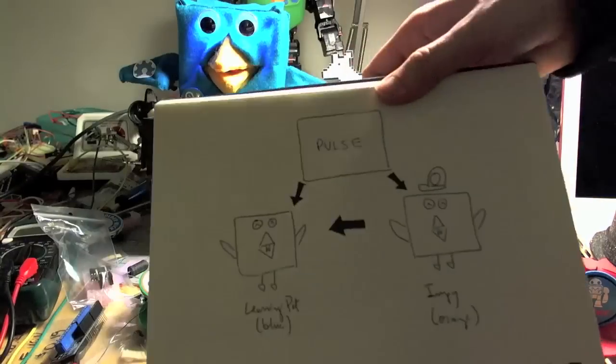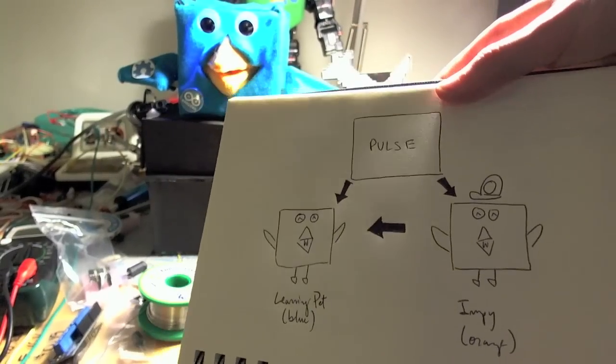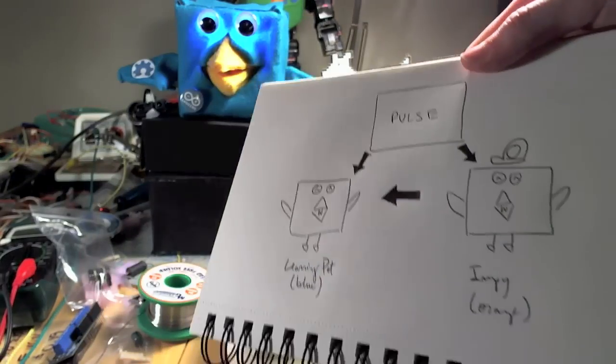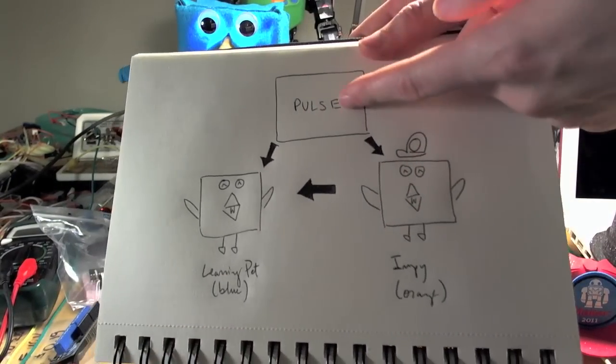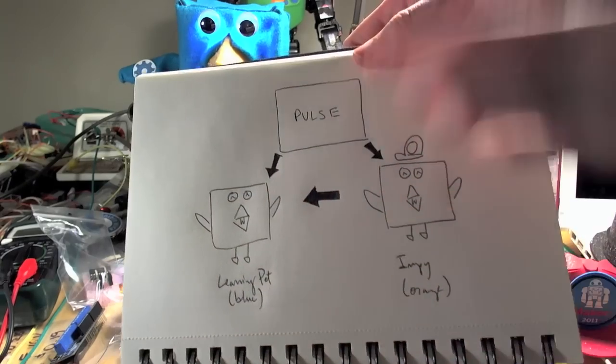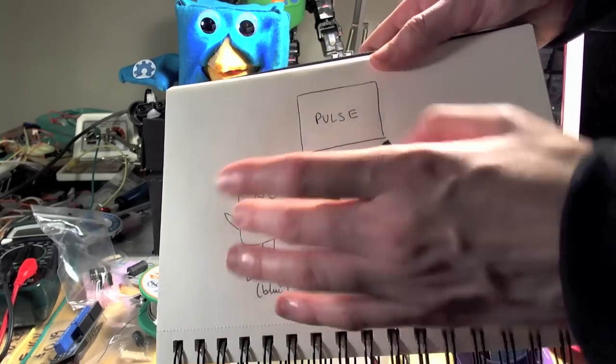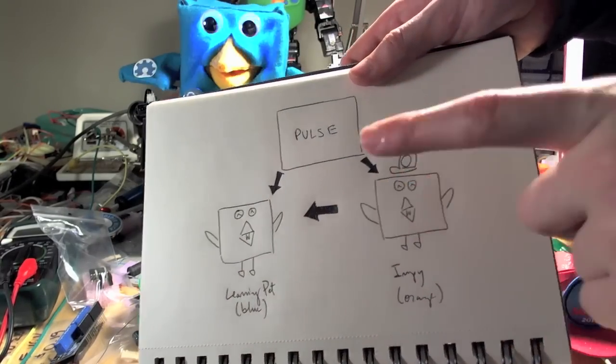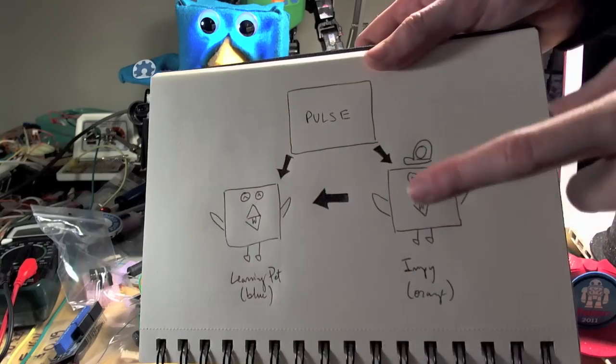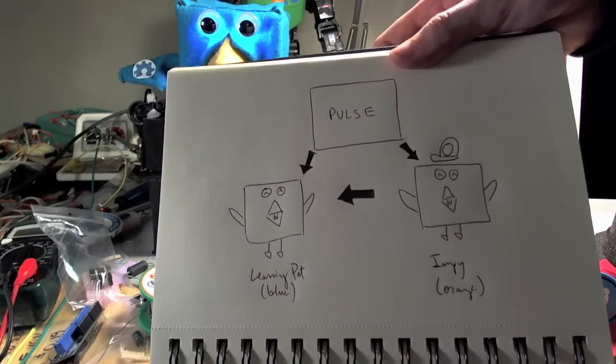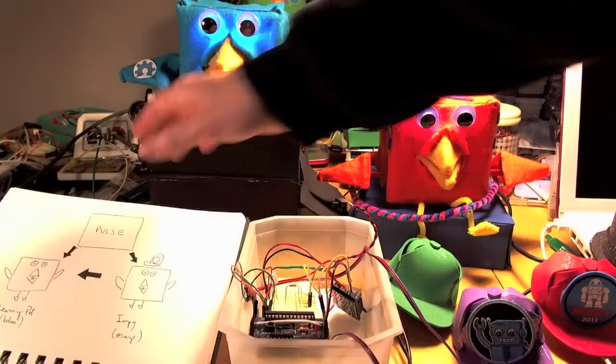There's basically three nodes in this mesh network. Basically the pulse node and then the two robo birds. Pulse one is sending to everyone. And these two are basically listening. And then this one is sending its hat data to that one, which affects that one's behavior as well as that one. So it's just a really simple example of a mesh network.